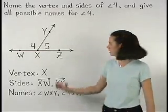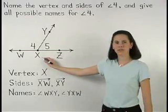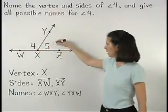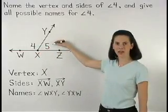But we cannot call it angle X because then we wouldn't know if we were talking about angle 4 or angle 5, since angle 5 also has a vertex of X.